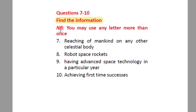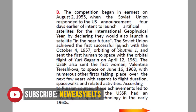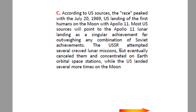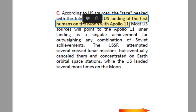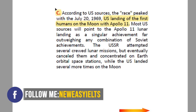Now moving to the Find the Information questions. Question seven: 'Reaching of mankind on any other celestial body.' A celestial body is any planet or object in space other than Earth. Reaching of mankind means humans reaching another celestial body — in this case, the moon. In paragraph C we find: 'US landing of the first humans on the moon with Apollo 11.' So the answer for this question is paragraph C.